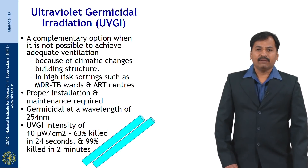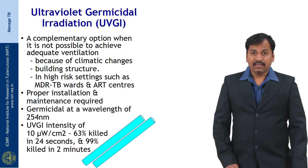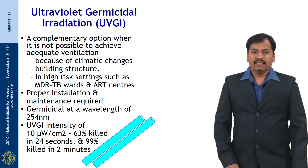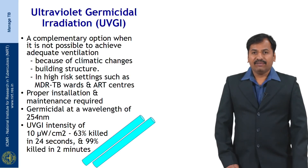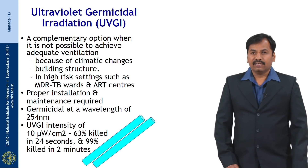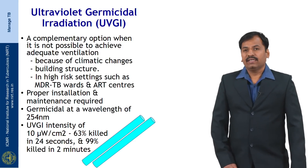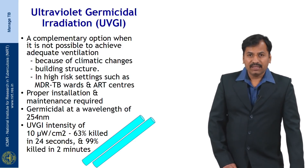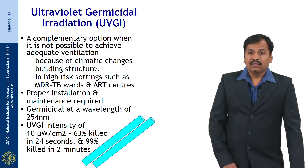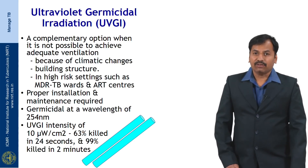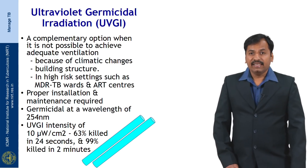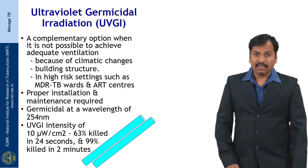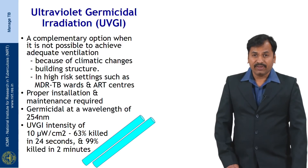Proper installation and maintenance is required if we install this UVGI. Germicidal at a wavelength of 254 nanometers and the UVGI intensity of 10 microwatt per square centimeters for the first 24 seconds kills 63 percent of bacilli, and if continued for the next 2 minutes, 99 percent of the infectious bacilli are killed. So it is a very effective measure that can be implemented in high risk settings.